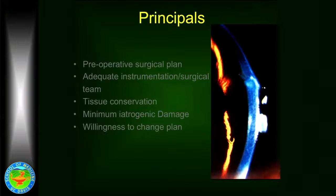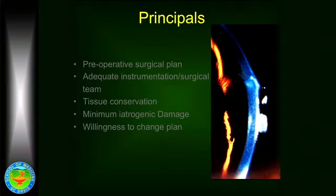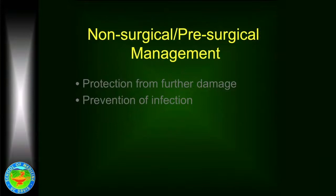Other principles of management: first, have a good surgical plan. In trauma you only know what you're going to do when you're on the operating table, but you need to go in with a plan in mind based on your assessment of the extent of the trauma. Make sure you and your surgical team have the right instrumentation. There are three things you need to be able to do: conserve tissue — do not excise tissue unless absolutely necessary; minimize any further damage during the operation; and always have a willingness to change the plan.